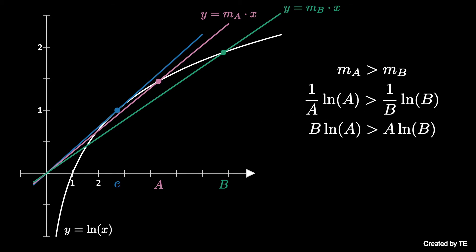So b times the natural log of a is greater than a times the natural log of b, and applying a logarithm rule results in the natural log of a to the b being larger than the natural log of b to the a.